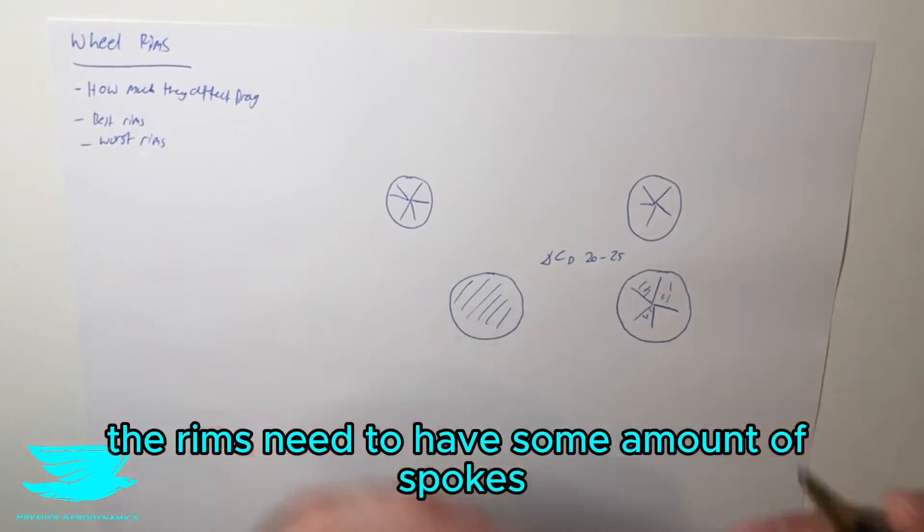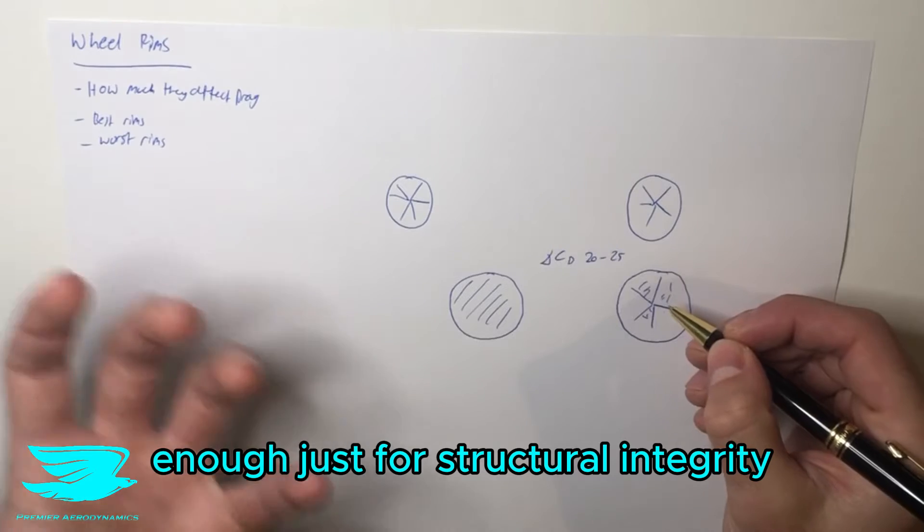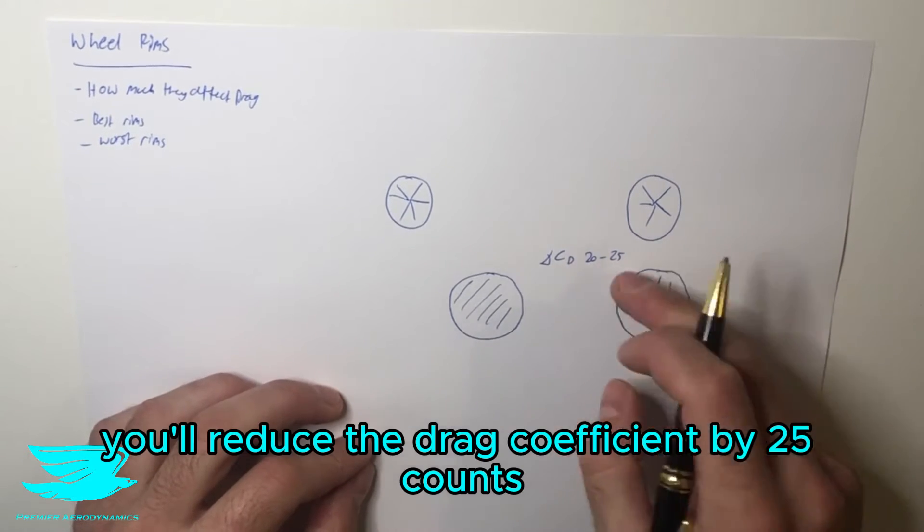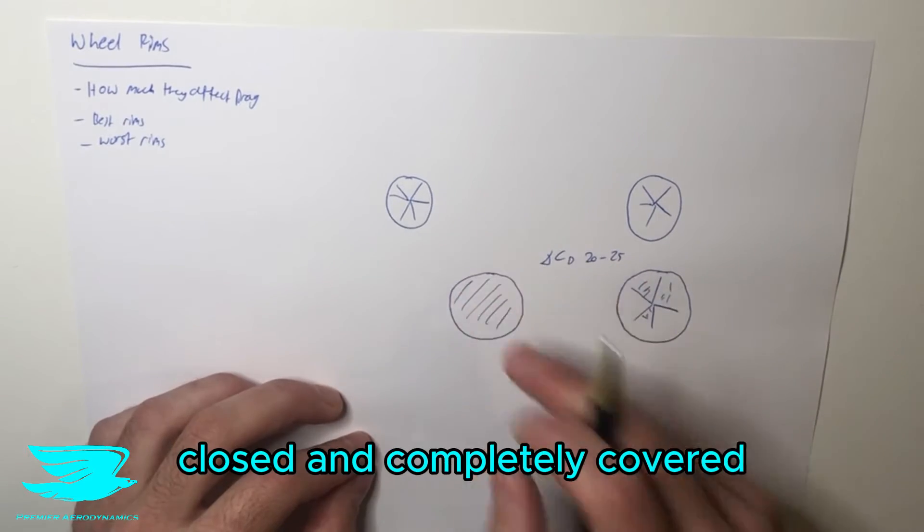And the rims need to have some amount of spokes in there just for structural integrity. So bare minimum, you'll reduce the drag coefficient by 25 counts going to a completely closed rim, completely covered.